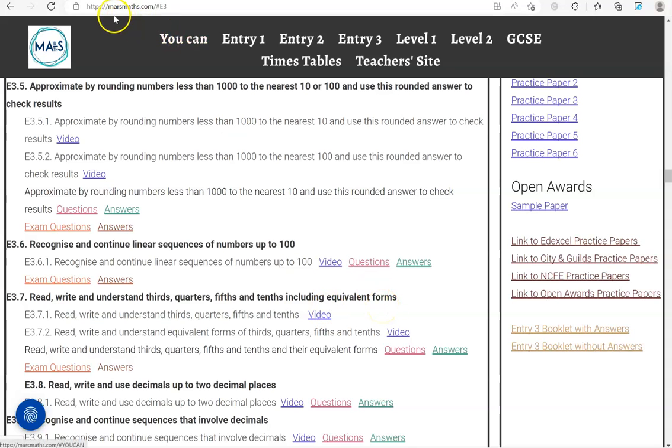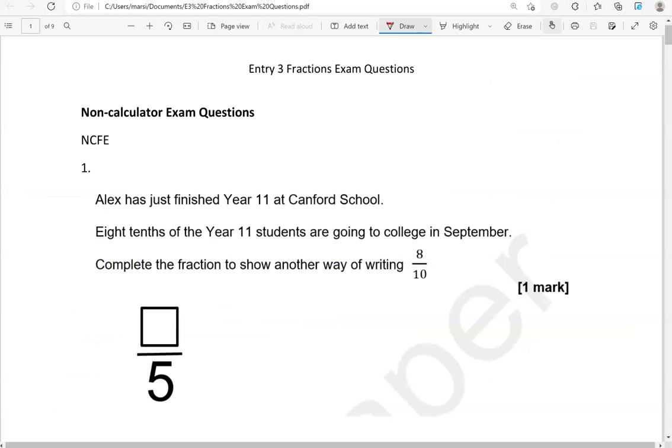You can locate the questions on the massmass.com website under Entry 3. The questions come from different exam boards. We'll start with the non-calculator questions, and then we'll move to the calculator questions.